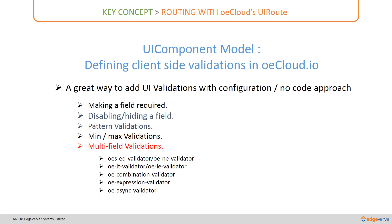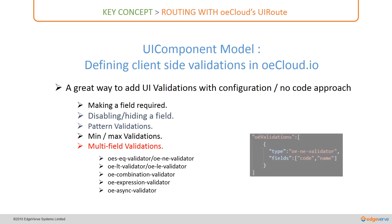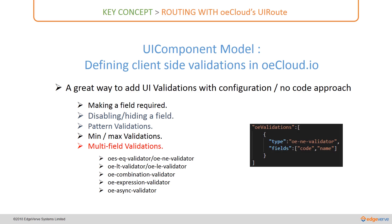First is the OEEQ validator — the not-equal-to validator. You use this type as OEEAnyValidator, which is a not-equal-to validator, where fields 'code' and 'name' should not have the same value. By mistake it is possible that code and name will contain the same value, so you restrict that entry with this particular validation.